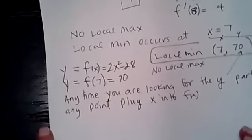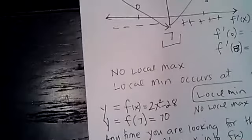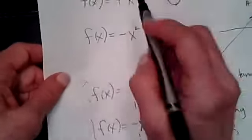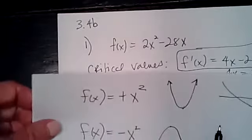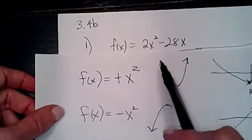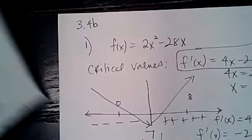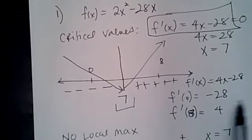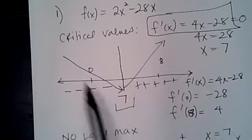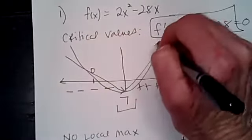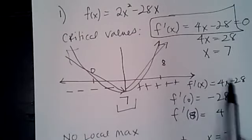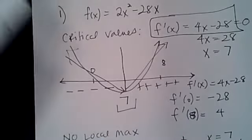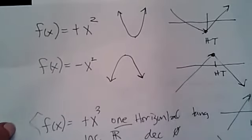Remember what I mentioned: if you have a positive x² function, it's always going to look like an upward parabola. So once I get x = 7, I can just draw my picture and know I'll have a local minimum there. I didn't really have to go through and make the sign chart. If you know what these functions look like, it saves you a lot of work.